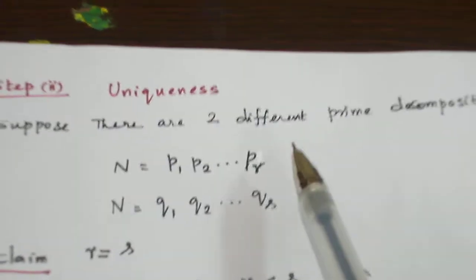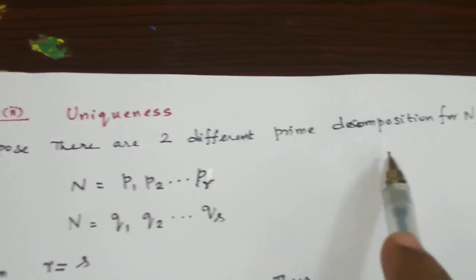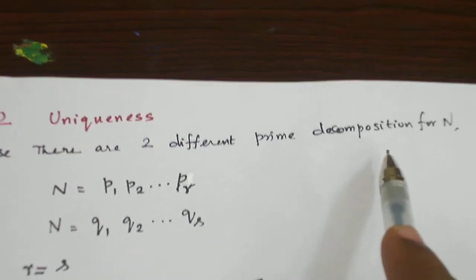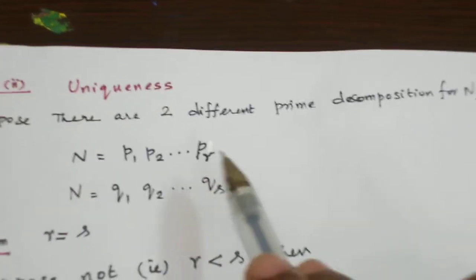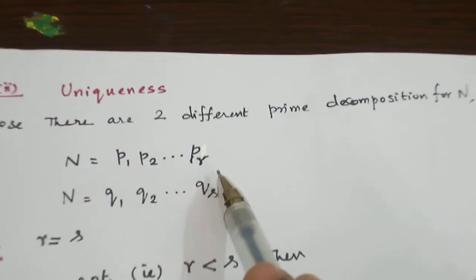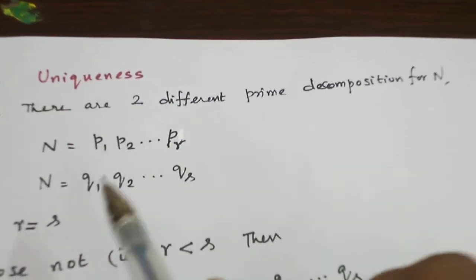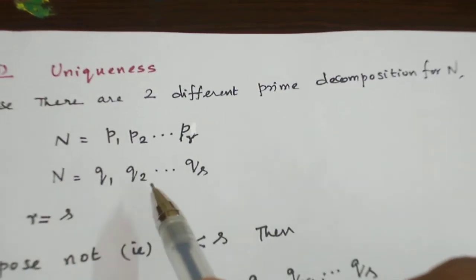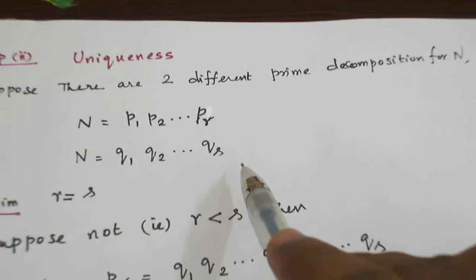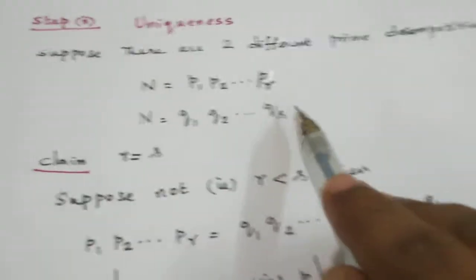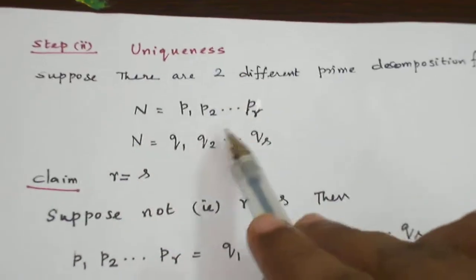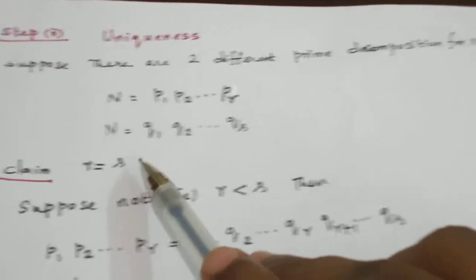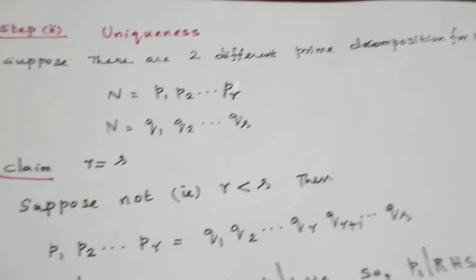Suppose there are two different prime decompositions — prime factorizations for the integer n: n = p1 · p2 · ... · pr and n = q1 · q2 · ... · qs. What we are going to prove is that r = s, meaning the number of primes appearing in each factorization is exactly the same.